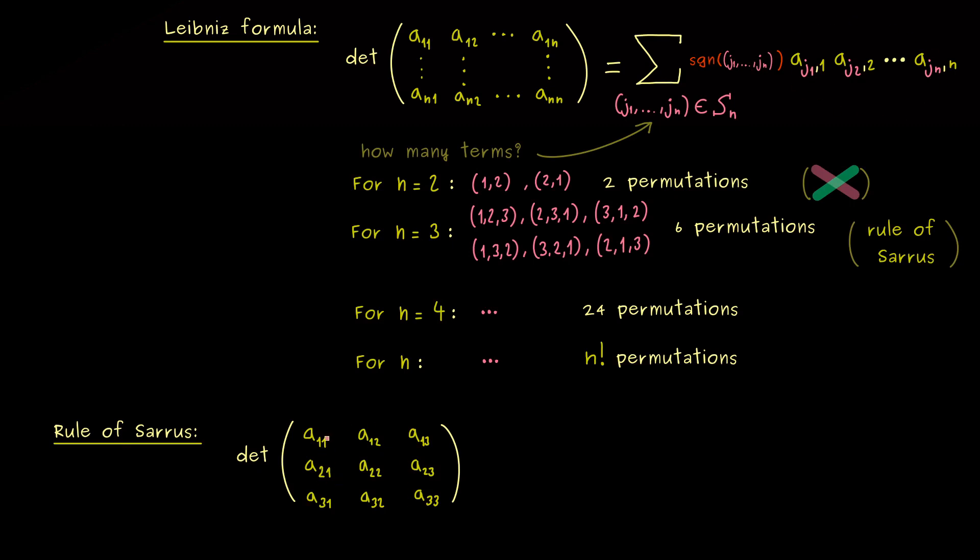So for example, if we want a product where a11 is included, we are not allowed to include any of the elements in this column or in this row. Hence, then we have to use an entry from this lower right part here. For example, a22. And then you see, we are also not allowed anymore to use any of these elements here. Therefore, only a33 remains. In other words, multiplying the main diagonal gives us one product already. And indeed, you should see it's a positive permutation. Therefore, the sign for this term in the sum is plus.